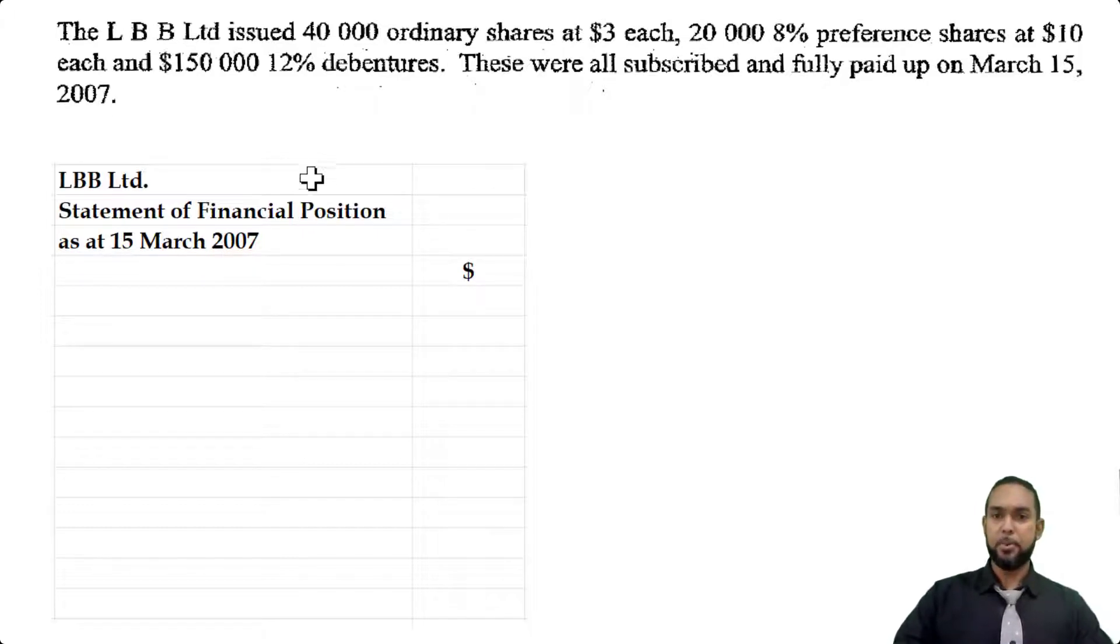So we're going to head it up properly: LBB Limited Statement of Financial Position as at 15th of March 2007. Now we could do the asset section first, but they did say to show the workings for the cash or bank amount. So because of that I'm going to do the capital and liability section first. Finance by capital and liabilities.